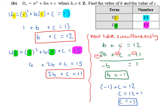Now we have two equations and we solve simultaneously to find b and c. b plus c equals 12, and 2b plus c equals 11. We change the signs of the bottom equation: b minus 2b is minus b, c minus c cancels, 12 minus 11 is 1, so b equals minus 1. Substituting b equals minus 1 into the first equation: minus 1 plus c equals 12, so c equals 13. The value of b is minus 1 and the value of c is 13.